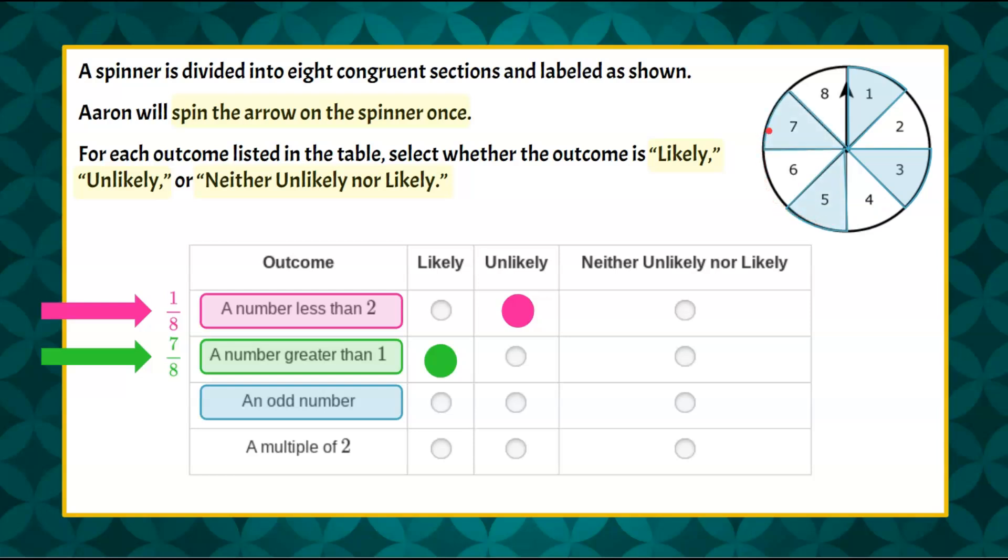So we can see that we have one, two, three, four of our sections. So four of our eight sections are an odd number. So we can see that four over eight, that's half of them. So we can say that it's neither unlikely nor likely. It's half of them, so it could go either way.